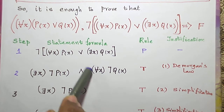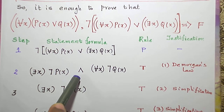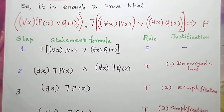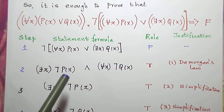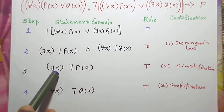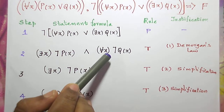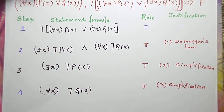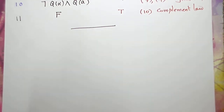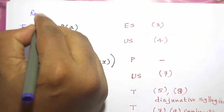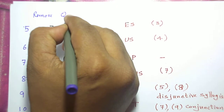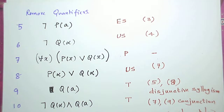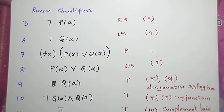This is a conjuncted statement, so let me separate these two statement formulas before removing the quantifier. I split: there exists x negation p(x), and for all x negation q(x), using the rule of simplification. Now let us remove the quantifiers.